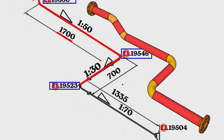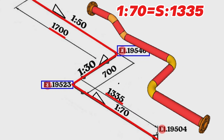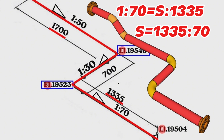At last, the pipeline turns with a 90-degree elbow to the south direction and travels for a length of 1,335 millimeters. The slope symbol ratio in this part of the pipeline is 1:70. We can calculate the slope: 1:70 equals S over 1,335, or S equals 1,335 divided by 70. Calculated and found approximately S equals 19 millimeters. This means the height of the pipeline drops by 19 millimeters over a distance of 1,335 millimeters.